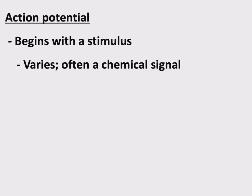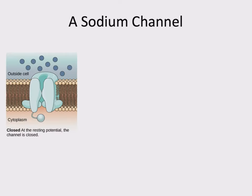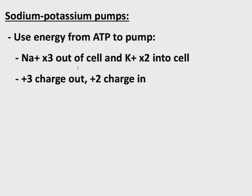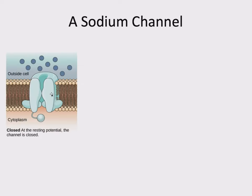What the stimulus does is open up a sodium channel in a localized area. At resting potential, a channel is a membrane protein that lets ions freely flow inside or outside wherever diffusion wants them to go. A stimulus causes the opening of a sodium channel in a localized area. If you've memorized that three sodium were pumped out and two potassium in, you should be able to conclude what happens next when a sodium channel opens.